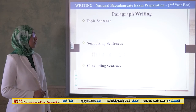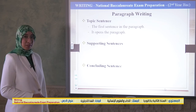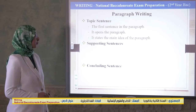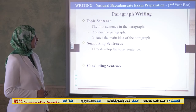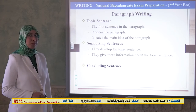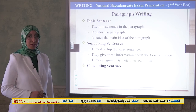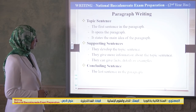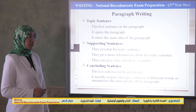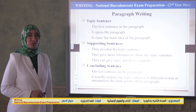The topic sentence is the first sentence in the paragraph. It opens the paragraph and states the main idea. Supporting sentences develop the topic sentence — they give more information and can include facts, details, or examples. The concluding sentence is the last sentence; it restates the topic sentence in different words or summarizes the main points.